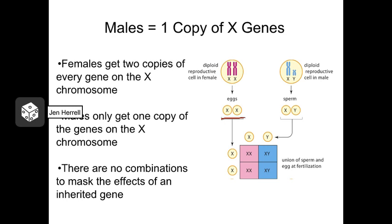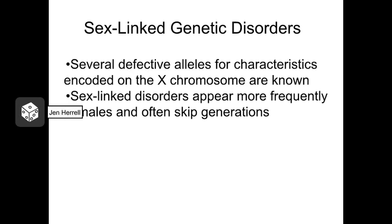Females inherit two copies of the X chromosome, so they can be homozygous or heterozygous for traits on the X chromosome. That means females can be carriers for certain traits on the X chromosome without expressing those traits. Males, on the other hand, only have one copy of the X chromosome, so whatever allele they inherit on that X chromosome is the one that will be expressed — there isn't a second X chromosome to cover up the actions of the other allele. So males cannot be carriers for sex-linked traits, and sex-linked disorders tend to show up more frequently in males than in females.